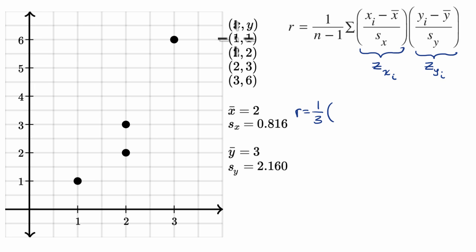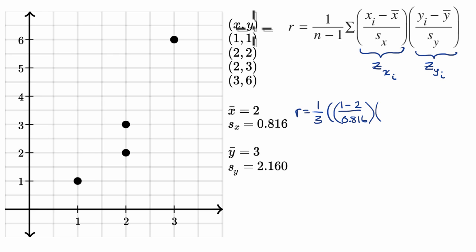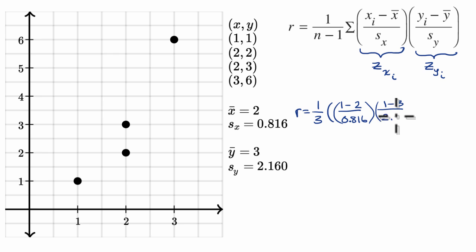So this first pair: the z-score for x is one minus two — how far it is away from the x sample mean — divided by the x sample standard deviation, 0.816. That times the y z-score: one minus three over the y sample standard deviation, 2.160.